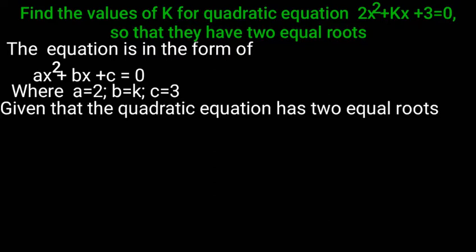Given that the quadratic equation has two equal roots, so discriminant is equal to 0.